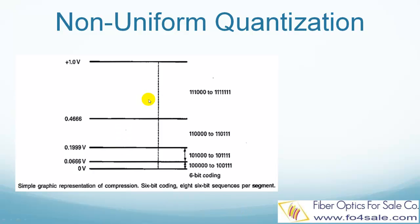In the non-uniform quantization process, the steps are not of equal size. Small steps are used for small signal values and large steps for large values. The purpose of doing so is to achieve a signal-to-noise ratio that is nearly independent of the signal level. This is done by favoring low-level voice over high-level voice — in other words, more code groups are assigned to speech at low levels than at higher levels, progressively more as the level reduces. This is shown in this figure.